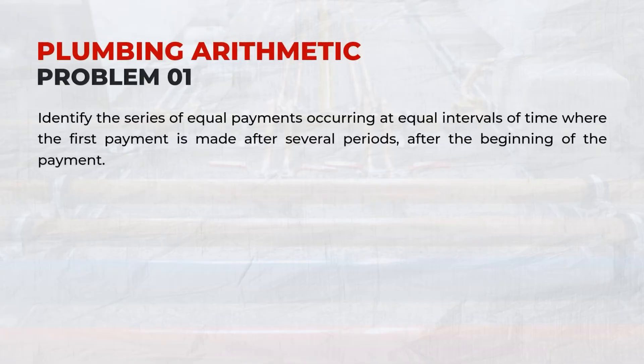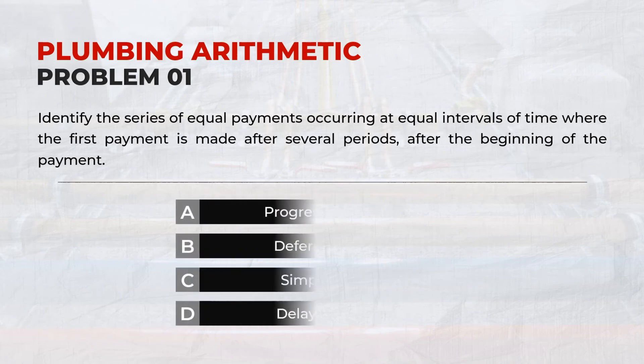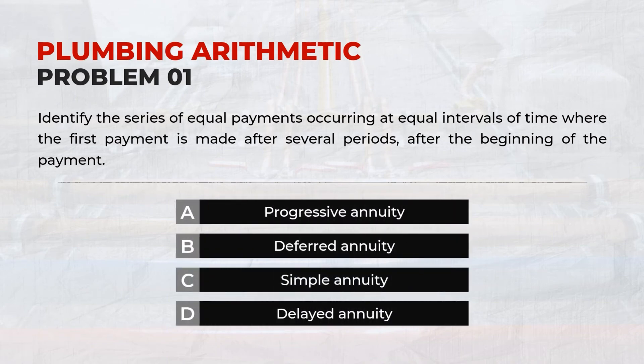Problem 01: Identify the series of equal payments occurring at equal intervals of time where the first payment is made after several periods, after the beginning of the payment. Answer: B, Deferred Annuity.